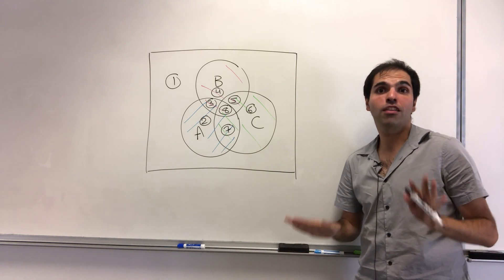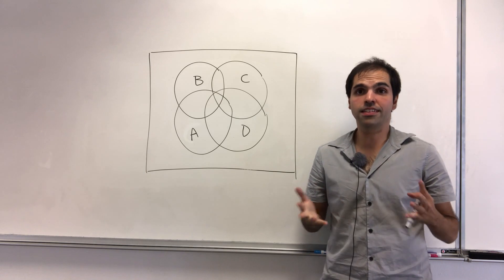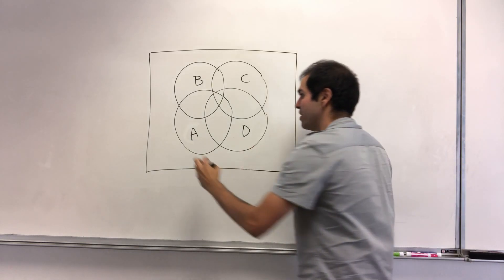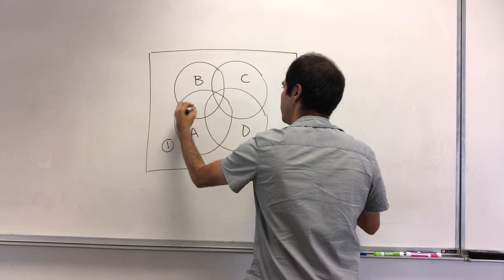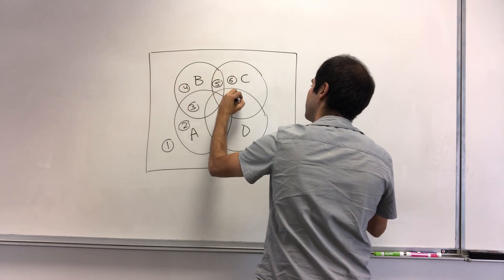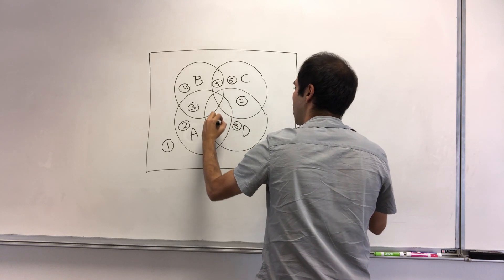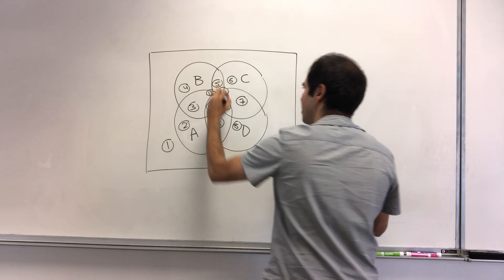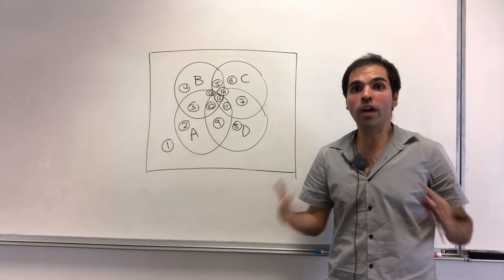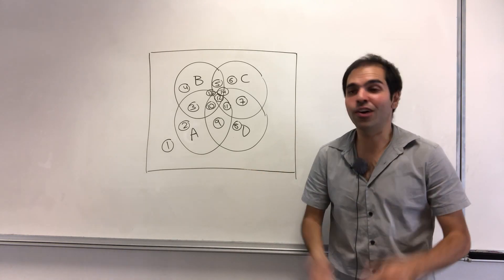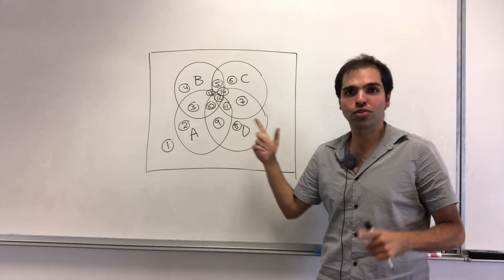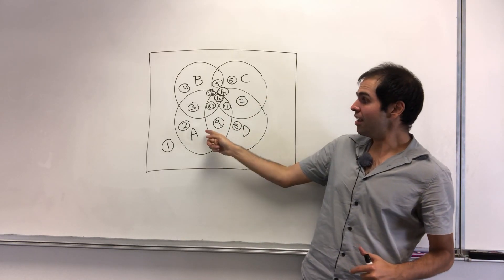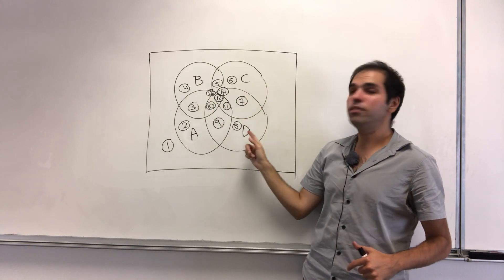But the question is, what about four sets? Then as they say, Houston, we have a problem, because it turns out we don't have 16 regions — we only have 14. The two regions that are missing are where elements are only in A and C, and only in B and D. It turns out you can't make circles represent those without overlap.